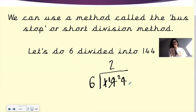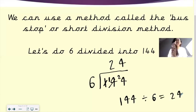And how many times does 6 go into 24? Use your 6 times table knowledge. 6, 12, 18, 24. So that is now 4 as our answer there. So then 144 divided by 6 equals how much? 24. And that is the bus stop method, or as some people know it, the short division method.